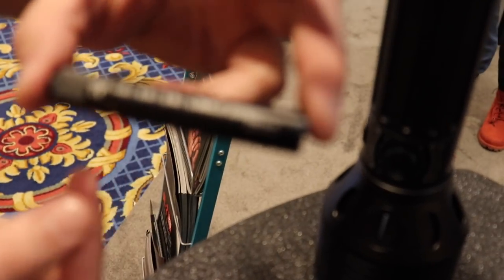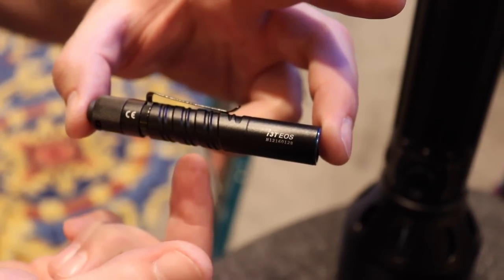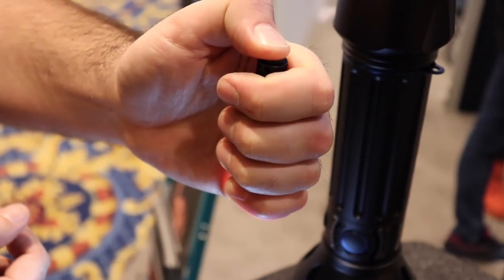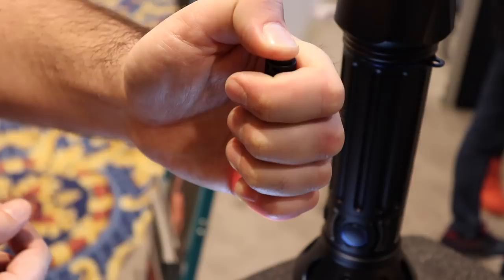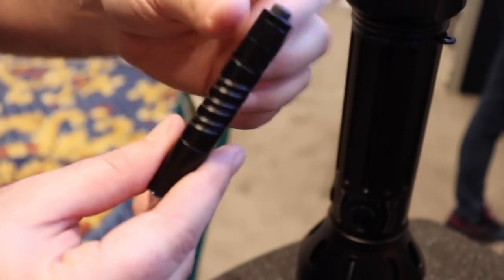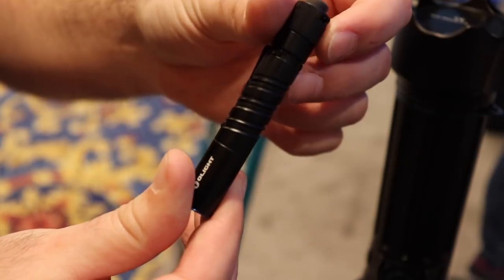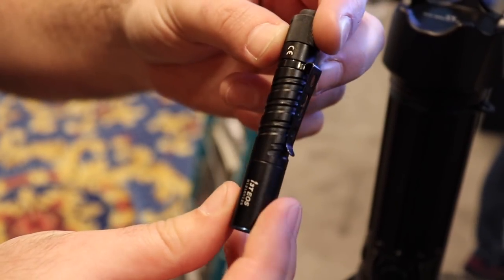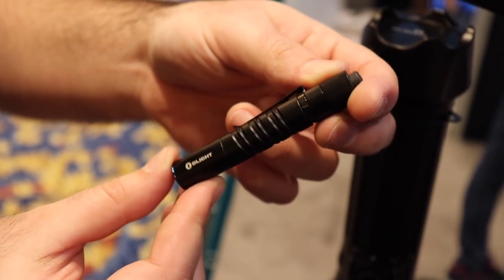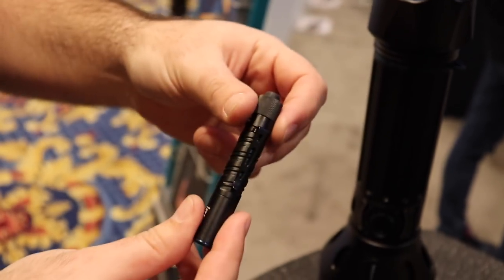So this is 160 lumens max, and it also has a 10 lumen low mode. And the tail switch, you can just cycle between the two modes just by half pressing. And then once you get to the mode that you want, you just fully press and it's there. And what we're starting to do is this really cool kind of twist milling, which gives you grip, but it also just gives it some flair, something different from what everybody else is doing. So that's the I3T AAA light, 160 lumens.